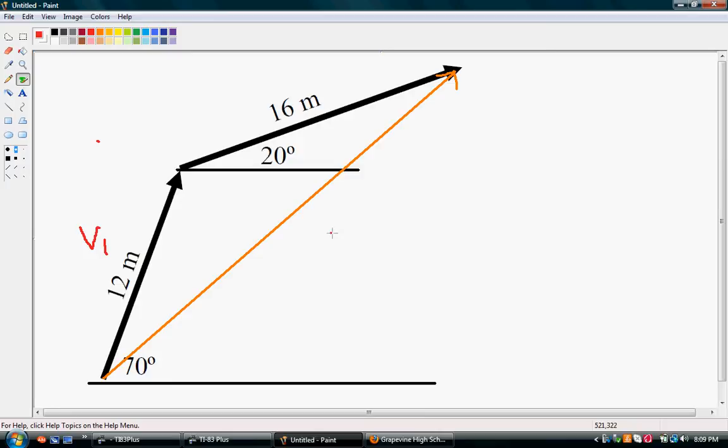Alright, so over here, we are going to write vector 1, and we know that it's equal to 12 meters. And our vector has an x component, we'll call x1, we don't know what that equals yet. And we have a y component, we'll call y1.